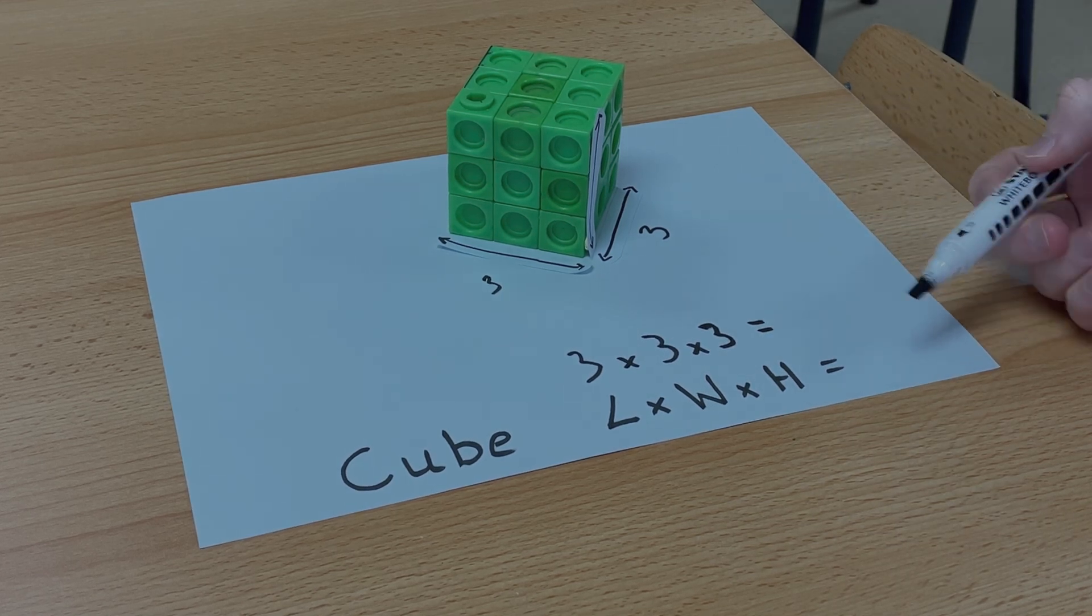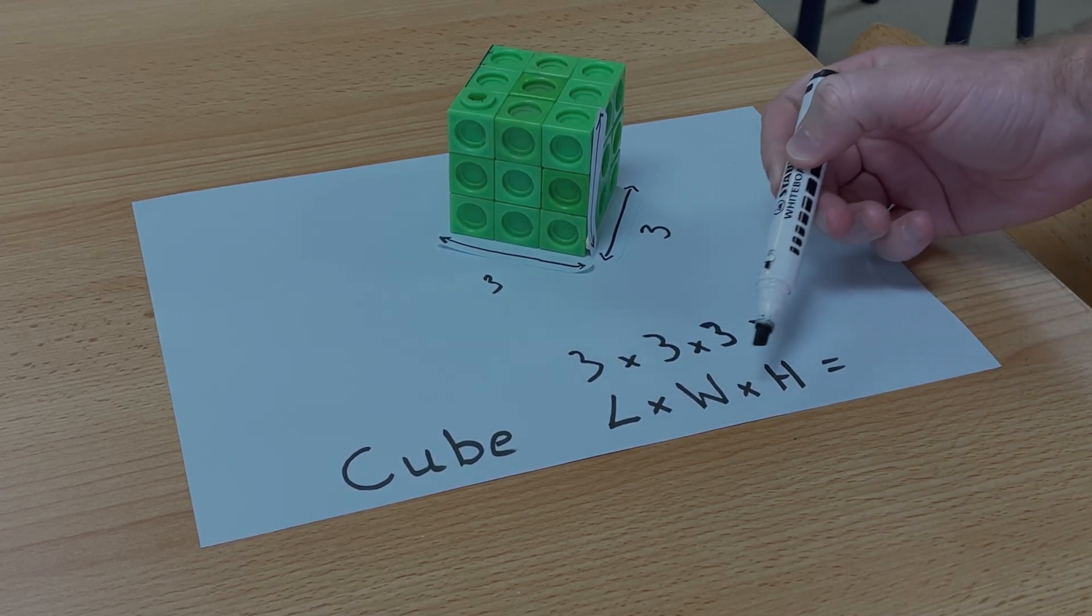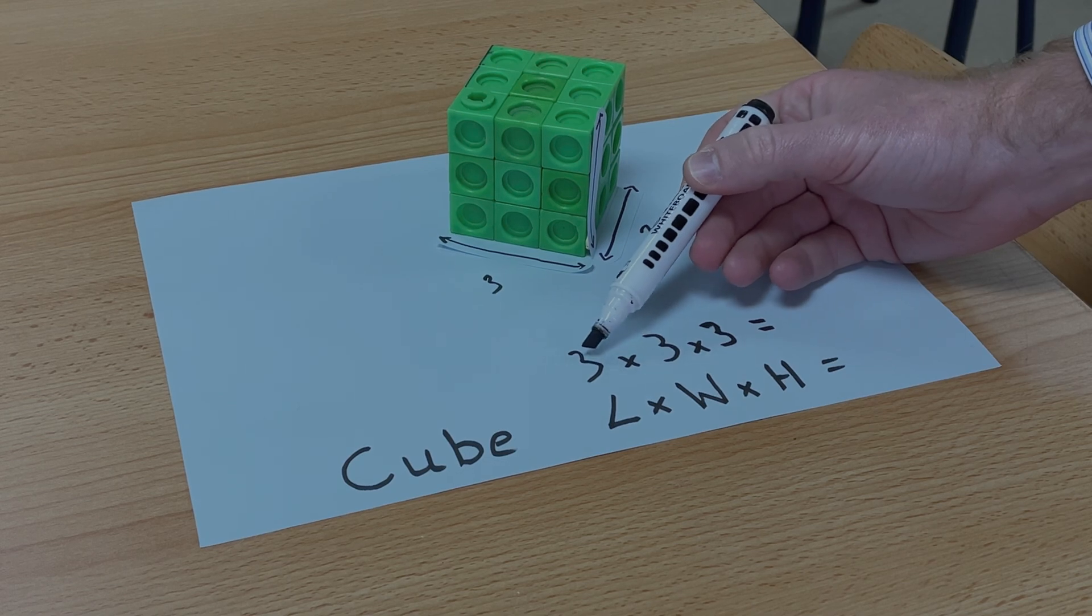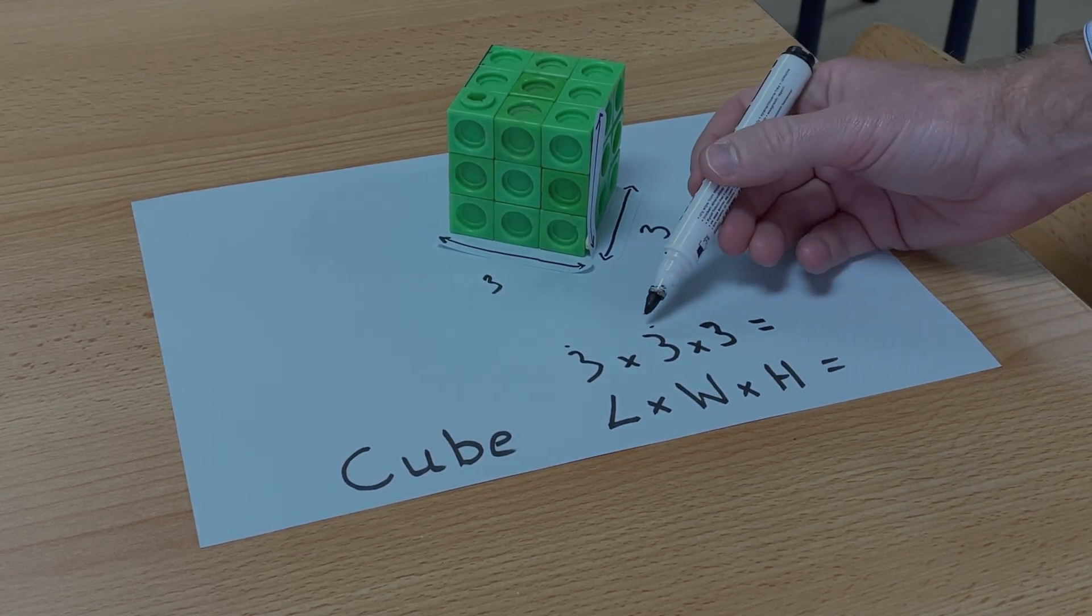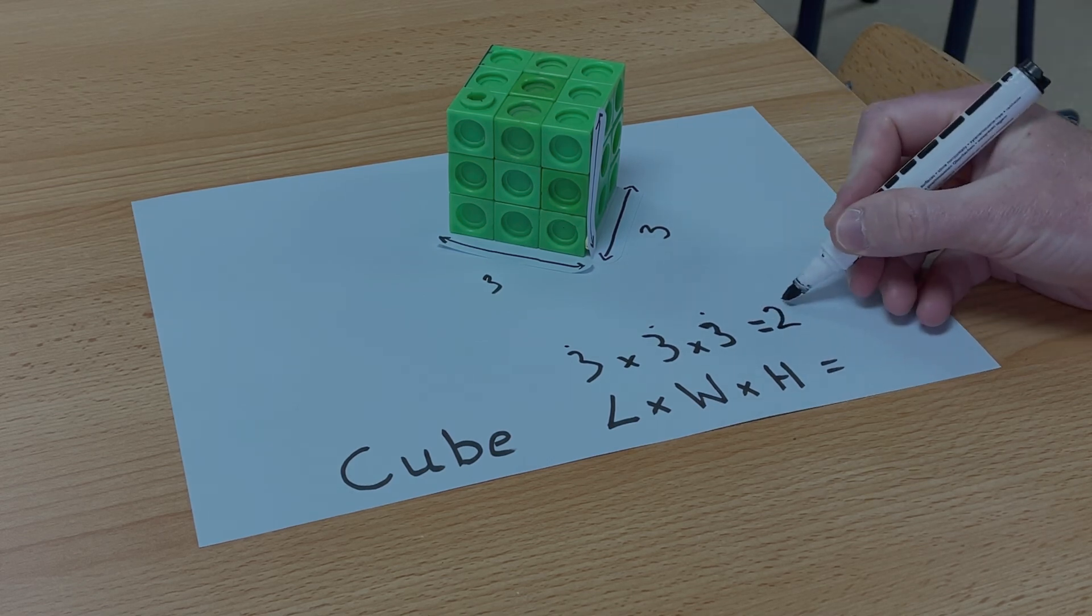So to find the volume, I need to multiply the length, the width, the height together. So 3 times 3 is 9. And 9 times 3 is 27.